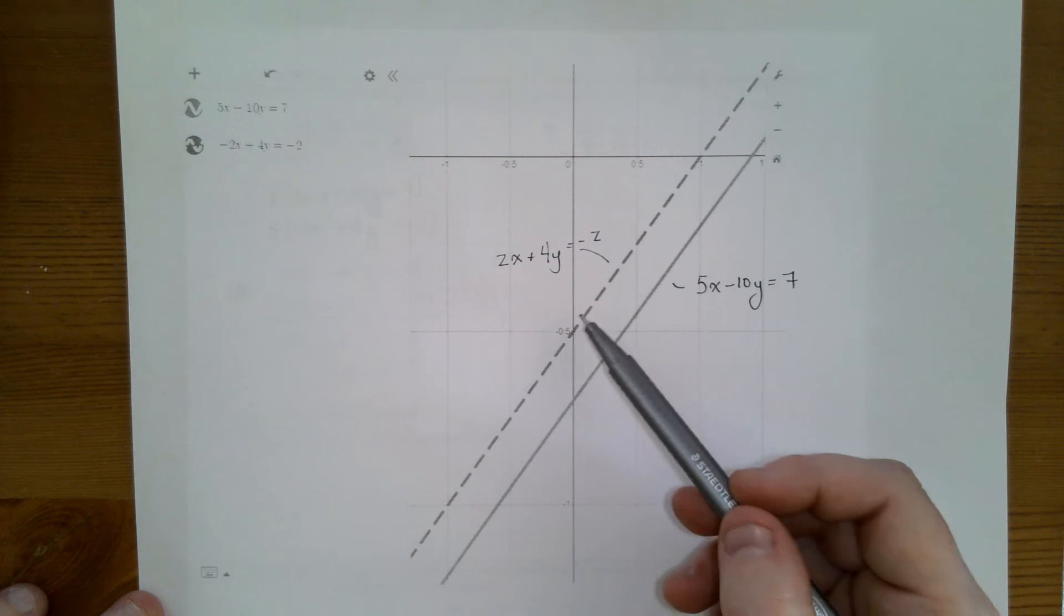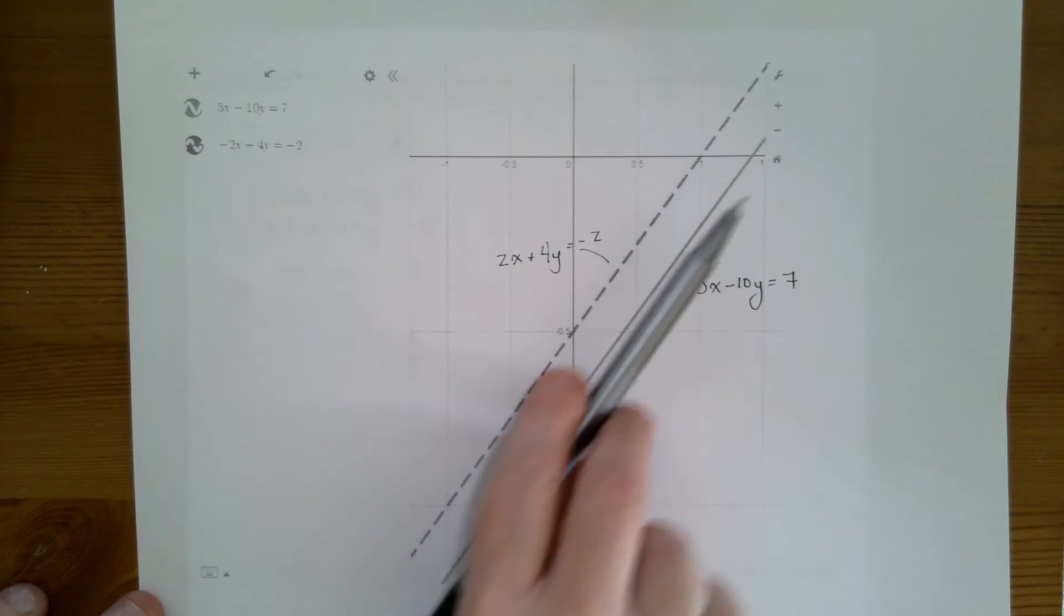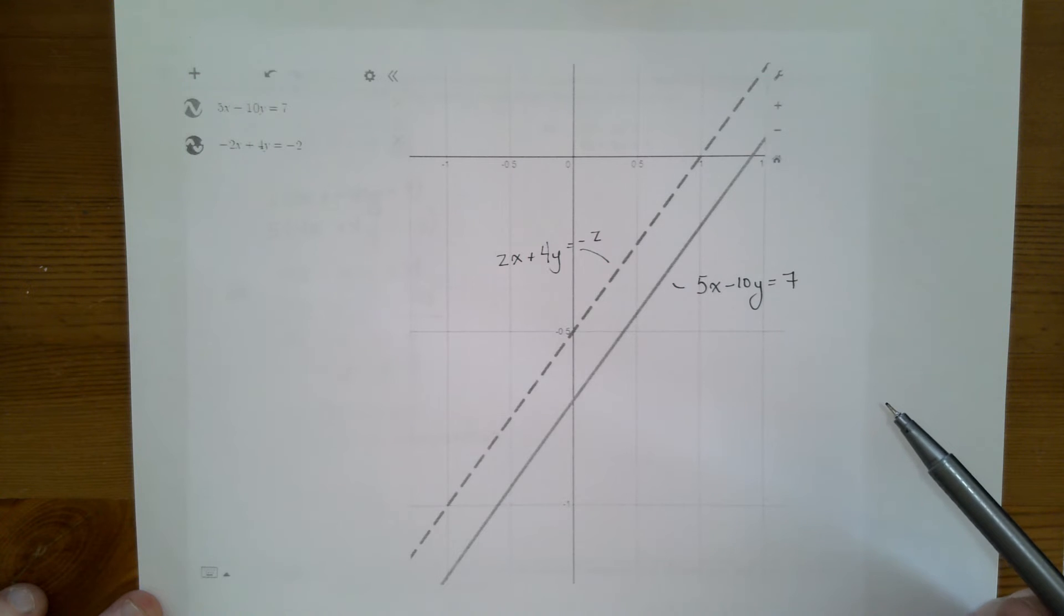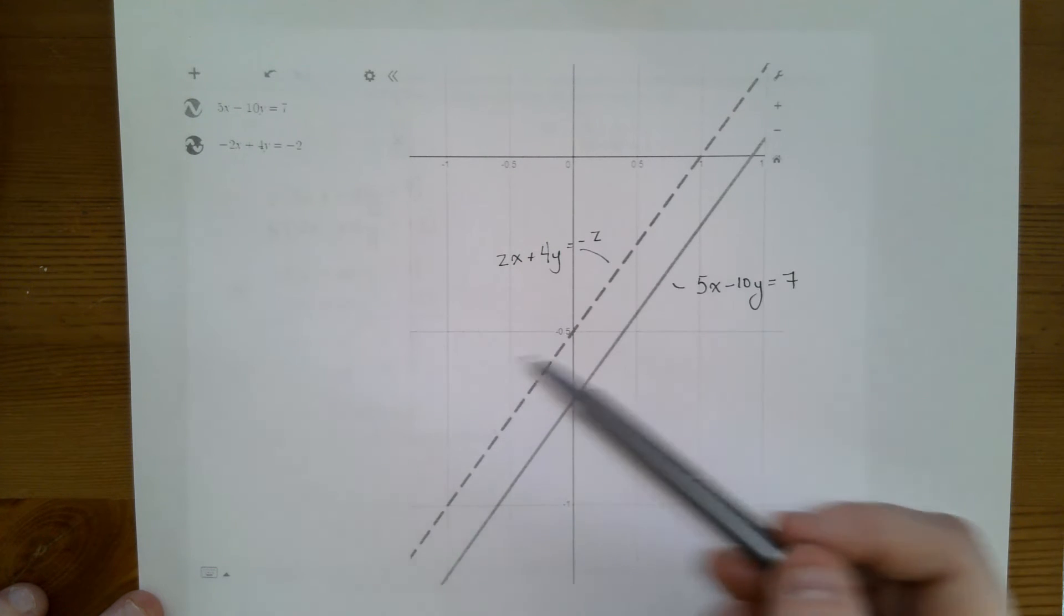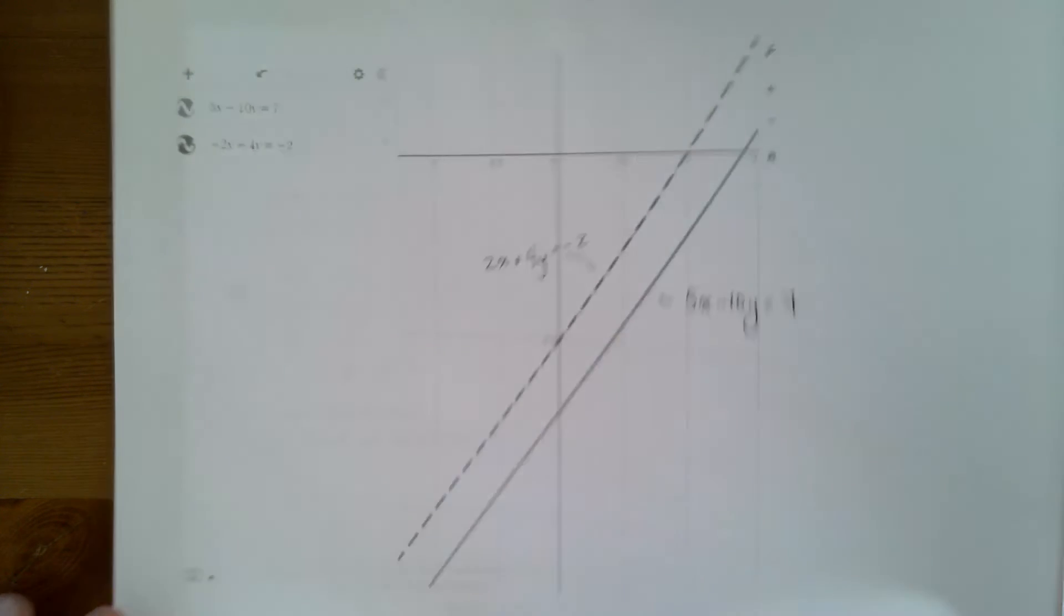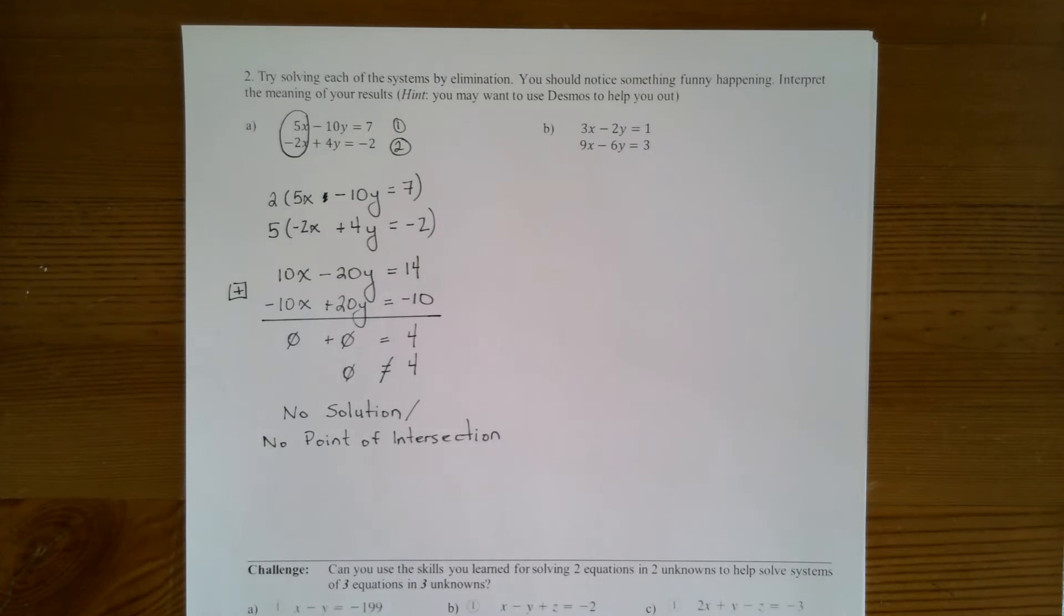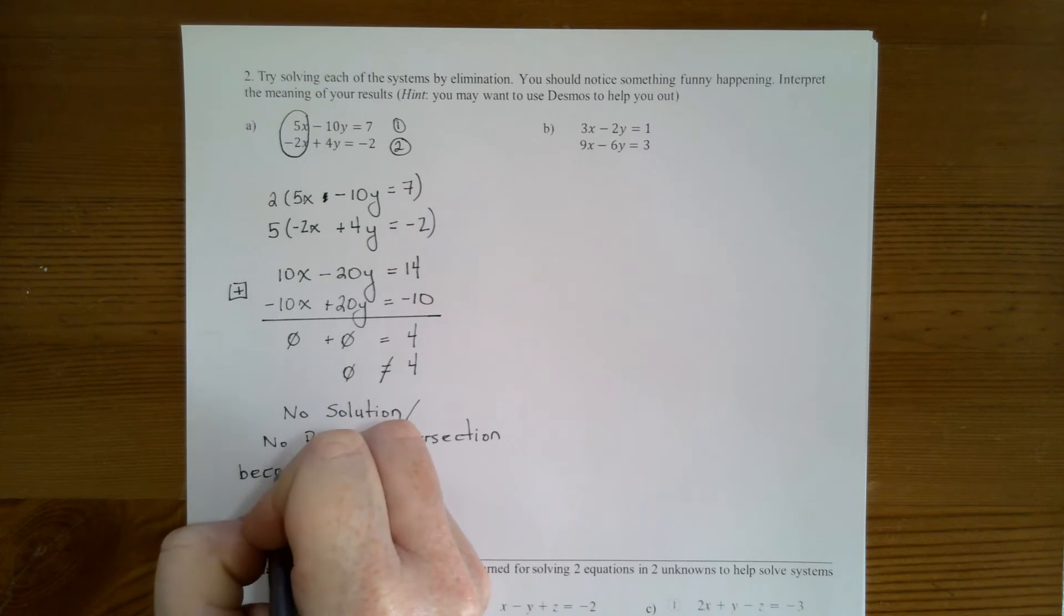I know that if two lines are parallel, they're never going to meet because they're just going to keep following their parallel path forever. Of course, there would be no solution if the lines are parallel. So there's no point of intersection because the lines are parallel.